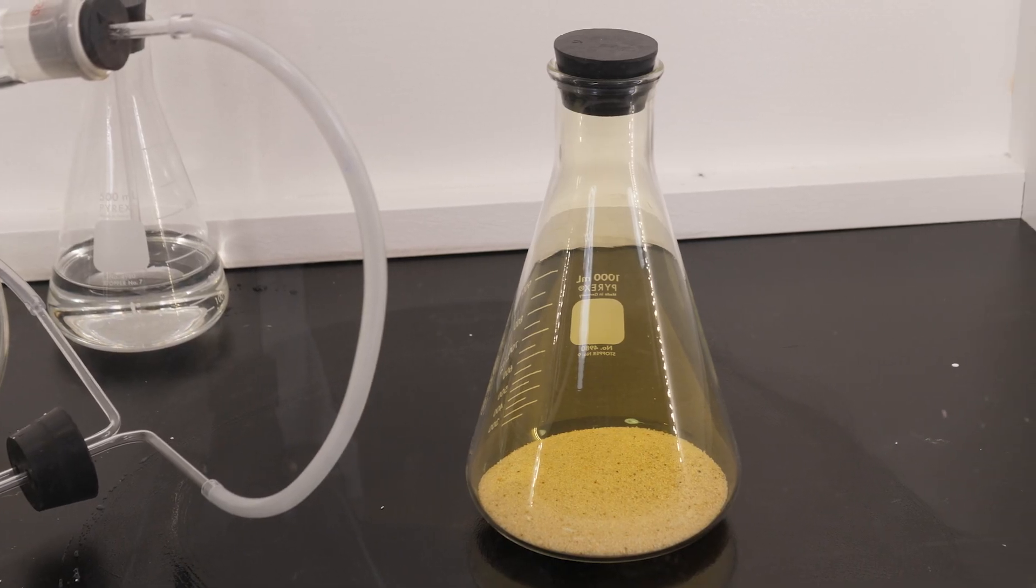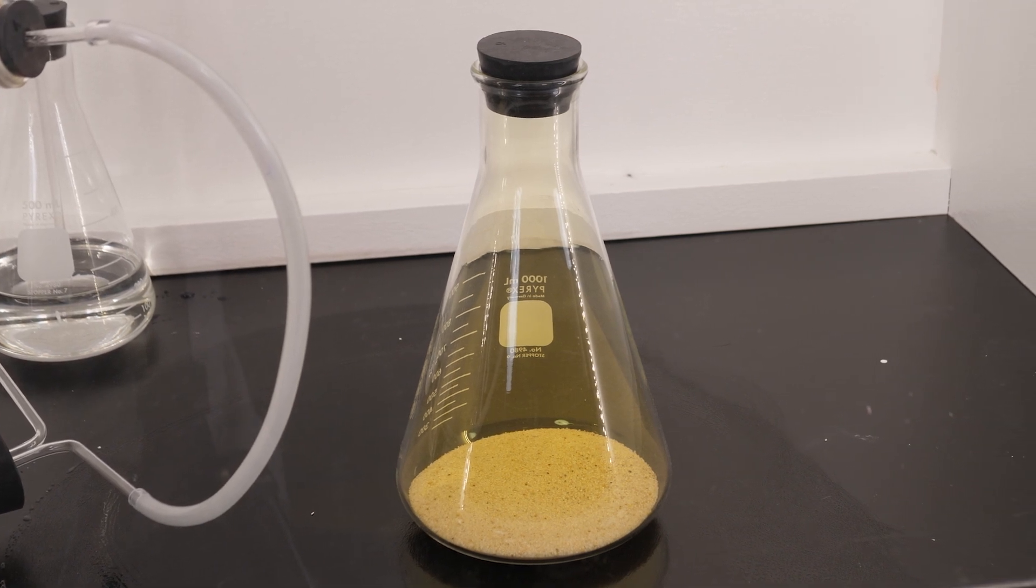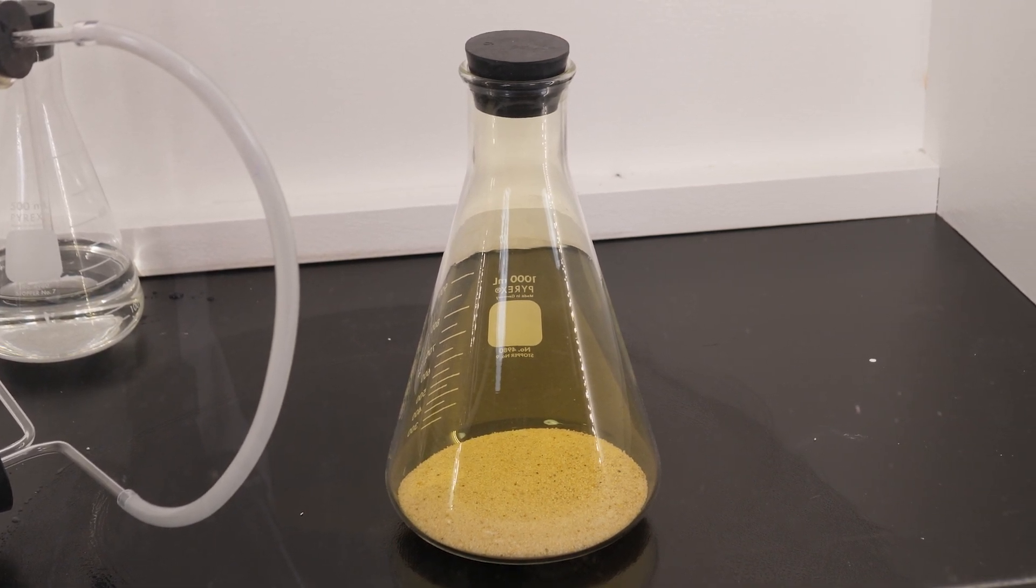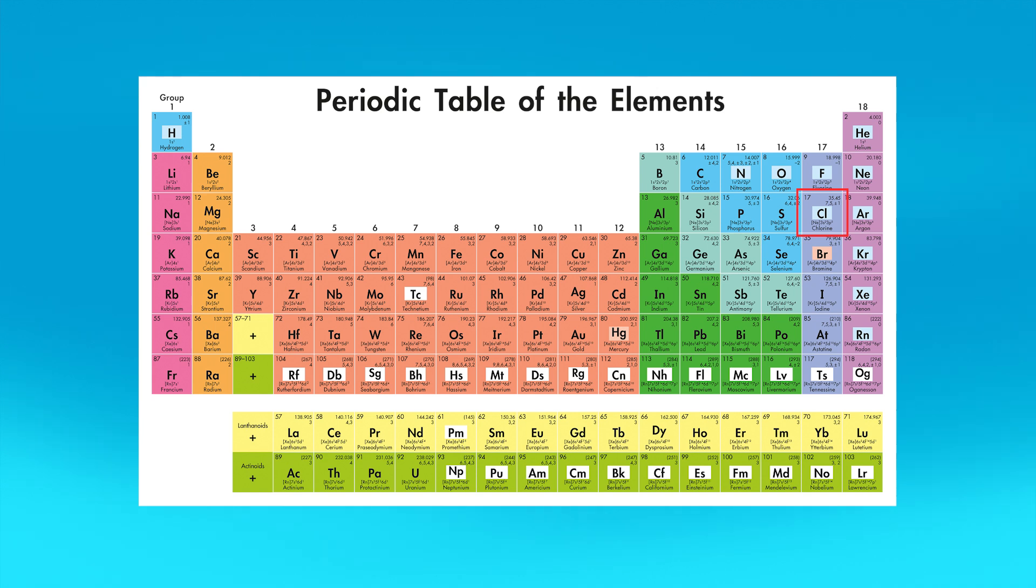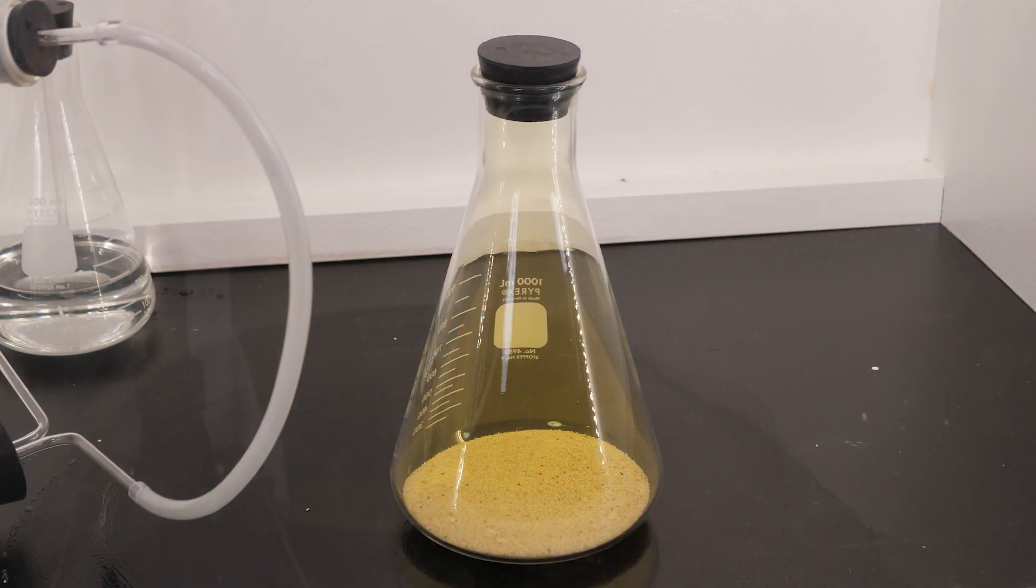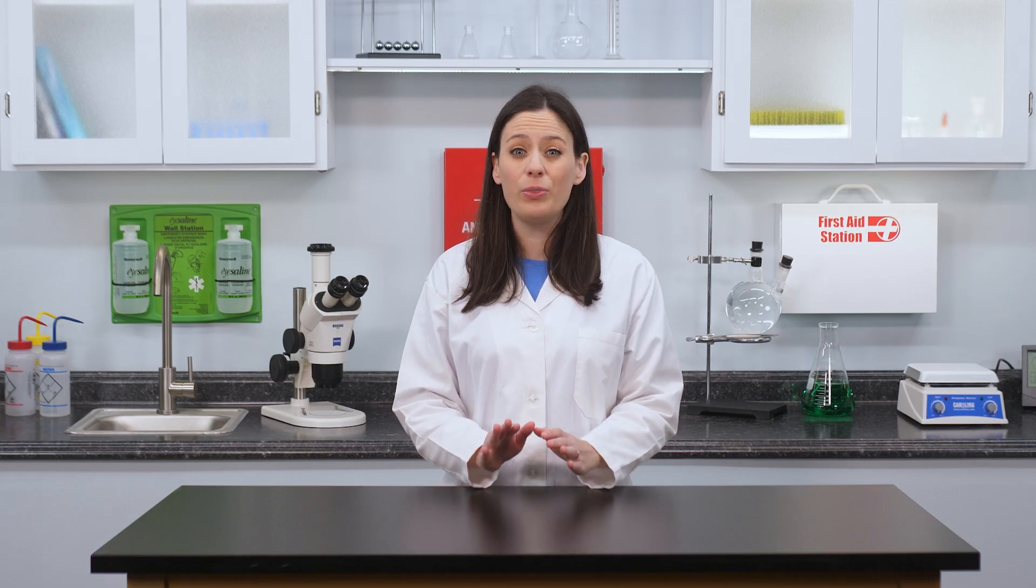The other reactant in the synthesis of sodium chloride is chlorine. Chlorine is a halogen, a chemically reactive non-metal located in group 17 on the periodic table. Chlorine is a greenish-yellow gas at room temperature. It has a strong smell, like rotten eggs. However, you must never inhale chlorine gas because it is toxic.